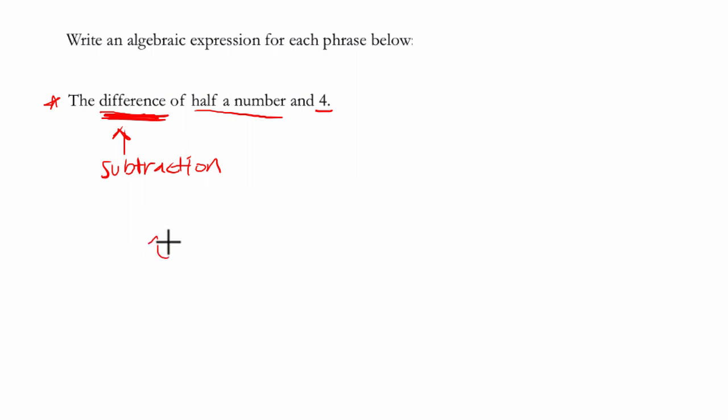So half a number, well let's say x is our number. To find half of that we can multiply it by a half or we can take the number and divide it by two. Those are equivalent statements.